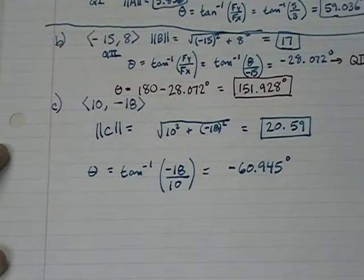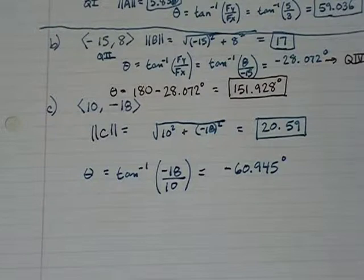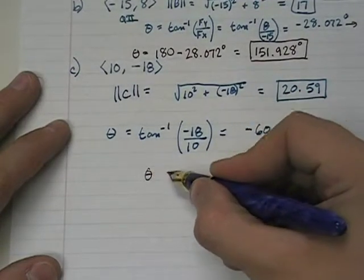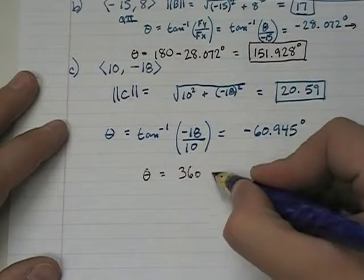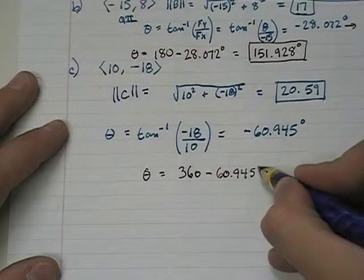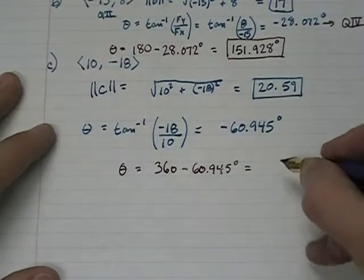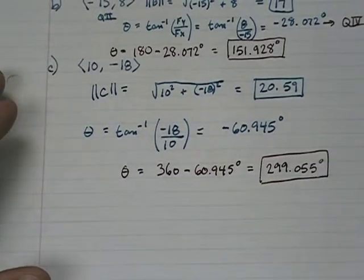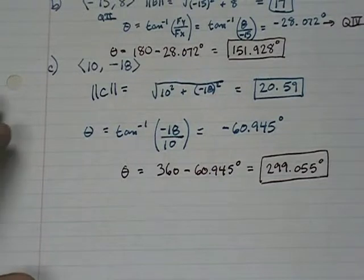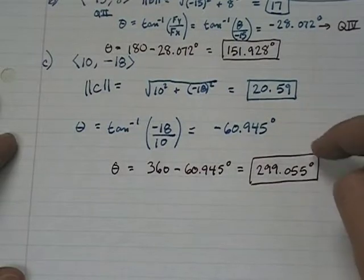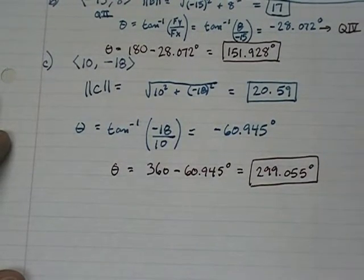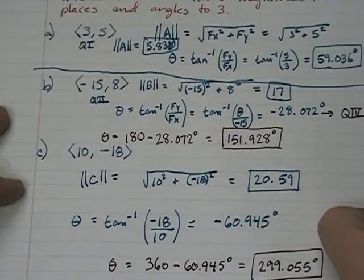However, typically, these angles are given in standard form, which means you start at the x-axis and rotate clockwise from 0 to 360. This is rotating counterclockwise because it's a negative angle. So how would you find theta in standard form? Quadrant 4 angles are always going to be 360 minus the reference angle, which is 60.945. So if we do that, we get 299.055 degrees. In this case, these two angles are coterminal. This angle and this angle are the exact same angle and they're 360 degrees apart. But this would be in standard form. Here is the magnitude and direction of three different vectors that began in component form.